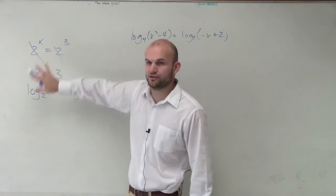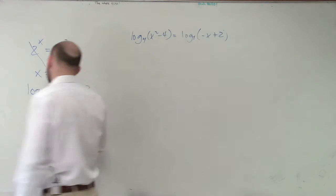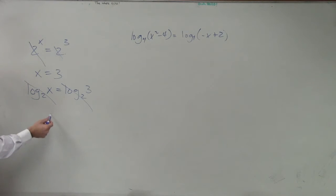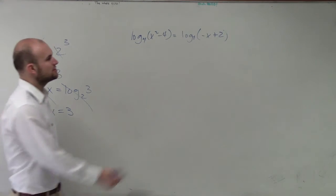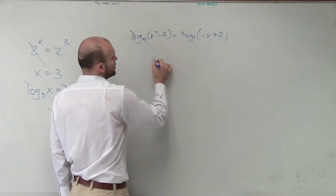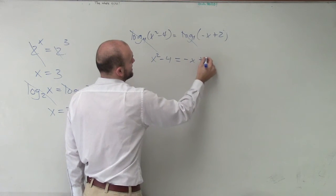So in this problem, all I want you guys to understand is, if I have log base 2 of x equals log base 2 of 3, the base and the logarithm aren't going to matter. We know whatever we're evaluating has to equal one another. In this case, since I have log base 4 equals log base 4, I now know that x^2 - 4 has to equal -x + 2.